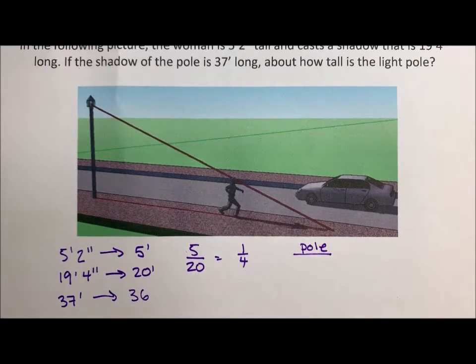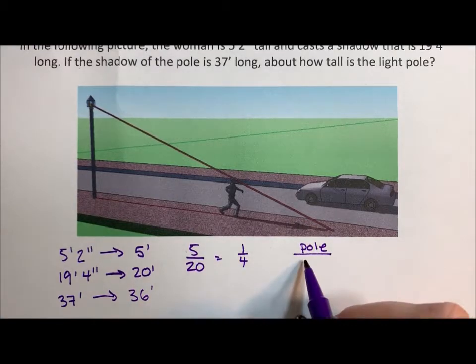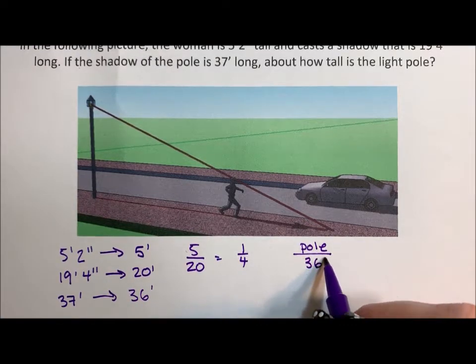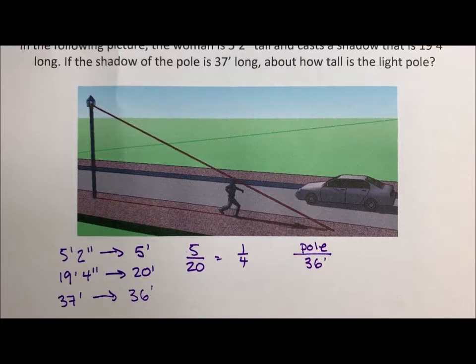36 feet. So if we want to know the height of the pole, if the shadow is about 36 feet, we just divide that 36 by 4, and 36 divided by 4 is 9. So we're gonna say that pole is about 9 feet tall.